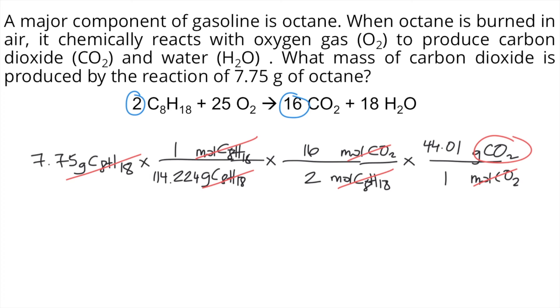Since we already got our desired unit, we can now solve this entire thing. So grab your calculator and you type 7.75 times 1 divided by 114.224 times 16 divided by 2 times 44.01 divided by 1. And you will get approximately 23.9 grams of carbon dioxide. And this is the answer to the question.